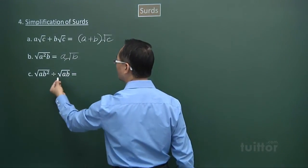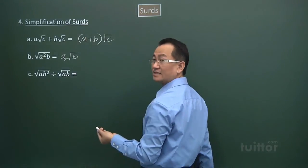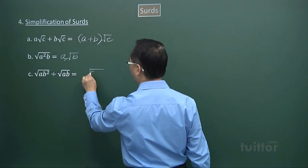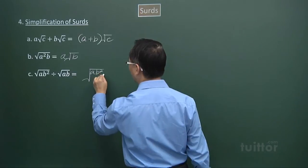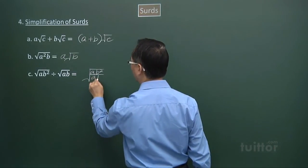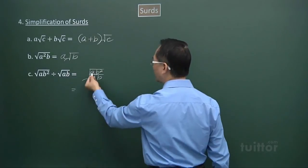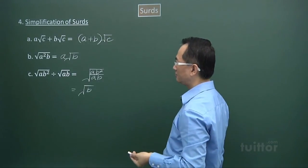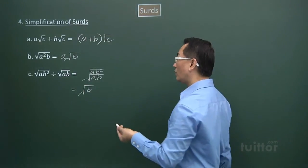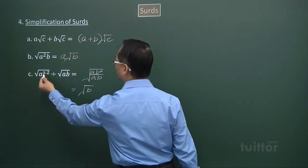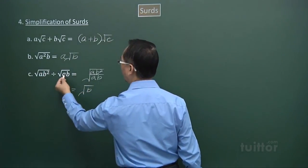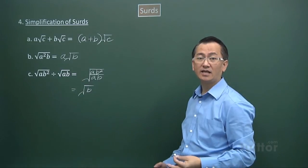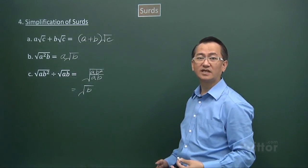Using one of the rules of surds, we have square root of ab squared divided by ab. After cancellation, we are left with just square root of b. We can think in terms of the quotient of ab squared and ab. We have come to the end of this video — review this as often as you can.